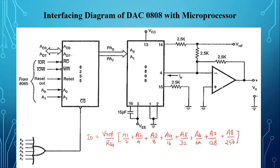For a typical circuit with V_reference = +5 volts and R14 = 2.5 kilohms, the full-scale current is calculated with all inputs A1 to A8 equal to 1: I_out = (5 / 2.5k) × (1/2 + 1/4 + 1/8 + 1/16 + 1/32 + 1/64 + 1/128 + 1/256).